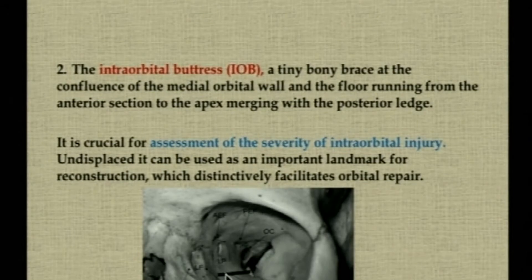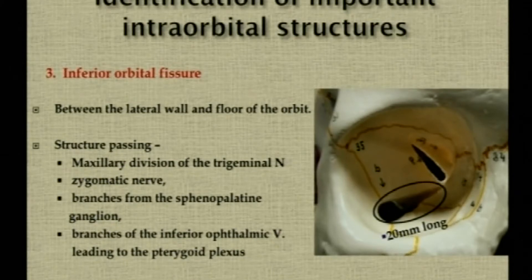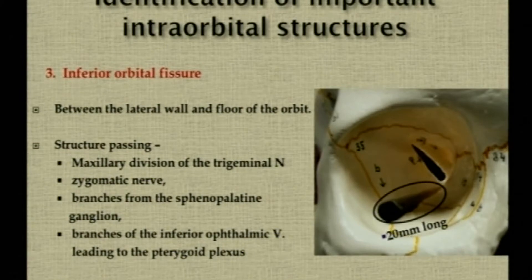The second important landmark is the intraorbital buttress — the maxillary-ethmoidal suture — a tiny bony brace at the confluence of the medial orbital wall with the floor, running from the anterior section to the apex and merging with the posterior ledge. It helps assess the severity of intraorbital injury and is an important landmark when undisplaced. The third structure is the inferior orbital fissure, which is 20 mm long, present between the lateral wall and the floor, and connects the orbit with the pterygopalatine and infratemporal fossa. It transmits the maxillary division of the trigeminal nerve, the zygomatic nerve, vidiopalatine ganglion branches, and branches of the inferior ophthalmic vein.